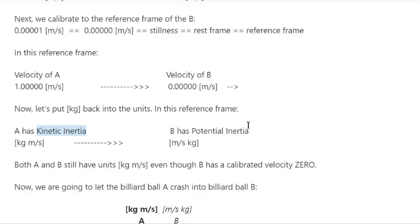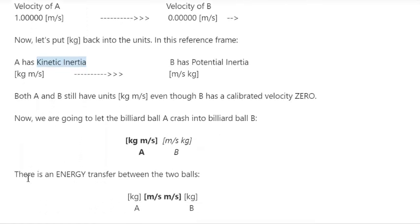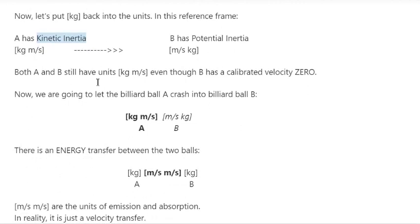So instead of kinetic and potential energy, I say kinetic and potential inertia. I'm pushing those terms back to the level of momentum, which is a form of inertia — an object in motion remains in motion, an object in stillness remains in stillness. Inertia is resistance to change. Both A and B still have the units of momentum — kilograms meters per second — even though B has a calibrated velocity of zero. Now we're going to let billiard ball A crash into billiard ball B.